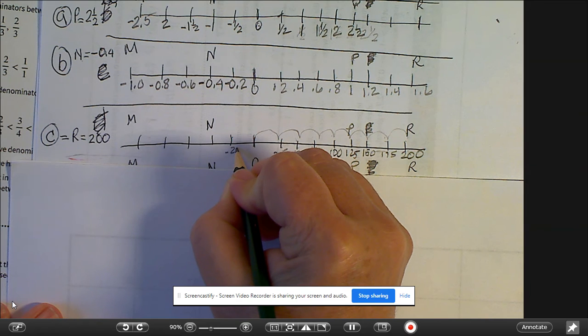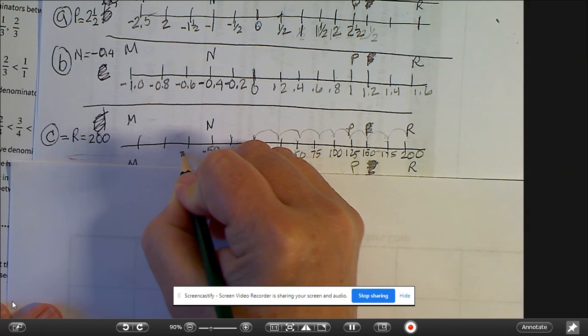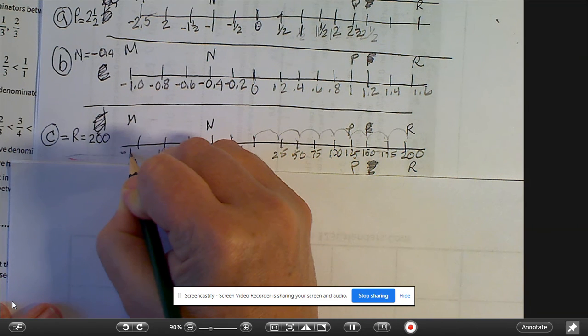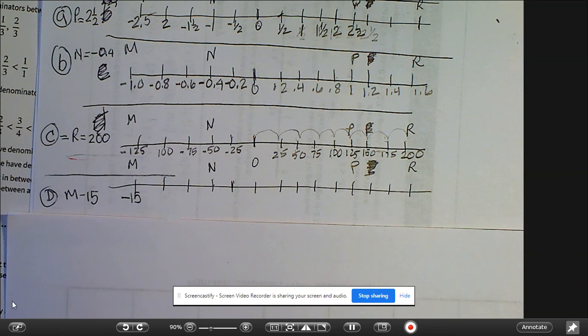So we're counting by 25 on this one. So this would be negative 25, negative 50, negative 75, negative 100, and negative 125.